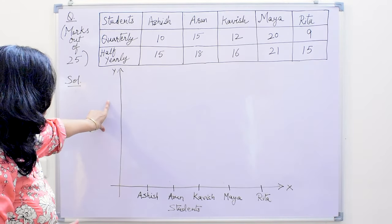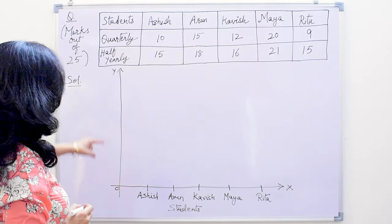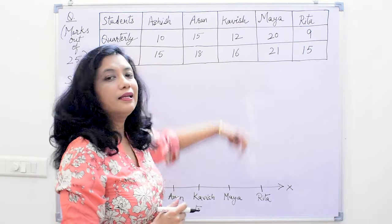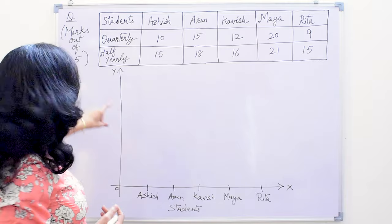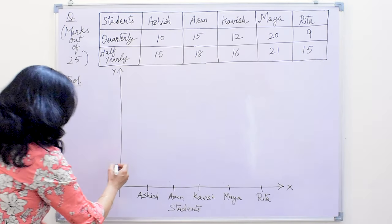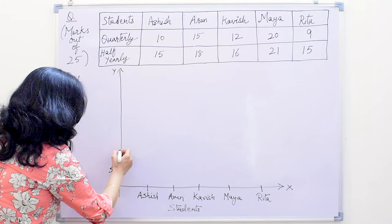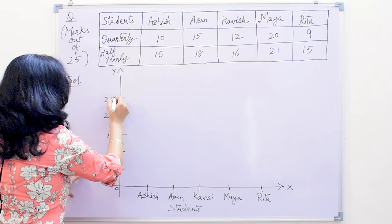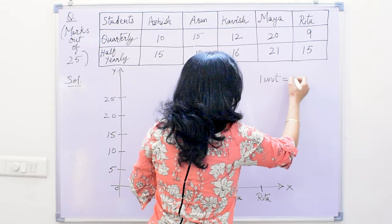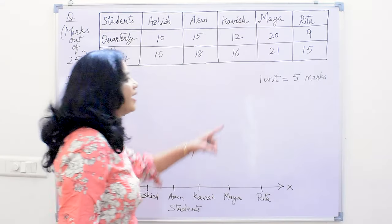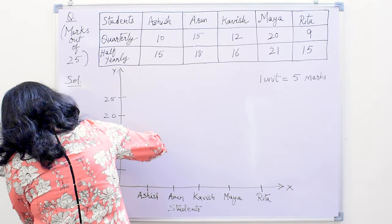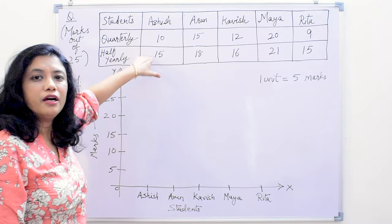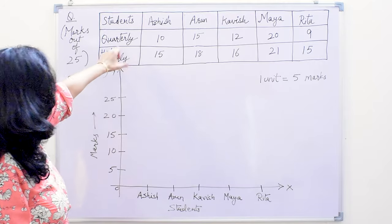Now we will mark the scale on the y-axis. The scale will start with zero. The maximum number we have to write on the scale should be a little greater than the greatest value here, so we can take it to 25. Let us take divisions of 5 — one unit is equal to 5 marks. We will write the unit on this side. These are the marks. Now we will plot both datasets one by one — first we will plot the quarterly marks.